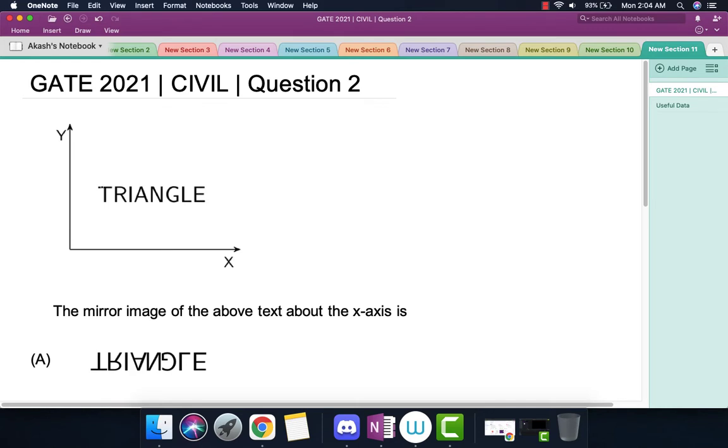We have an x-y coordinate system in which the word TRIANGLE is given, and the mirror image of the text about the x-axis is being asked. The x-axis is acting as a mirror, and we have to determine what the mirror image of the word TRIANGLE would look like.